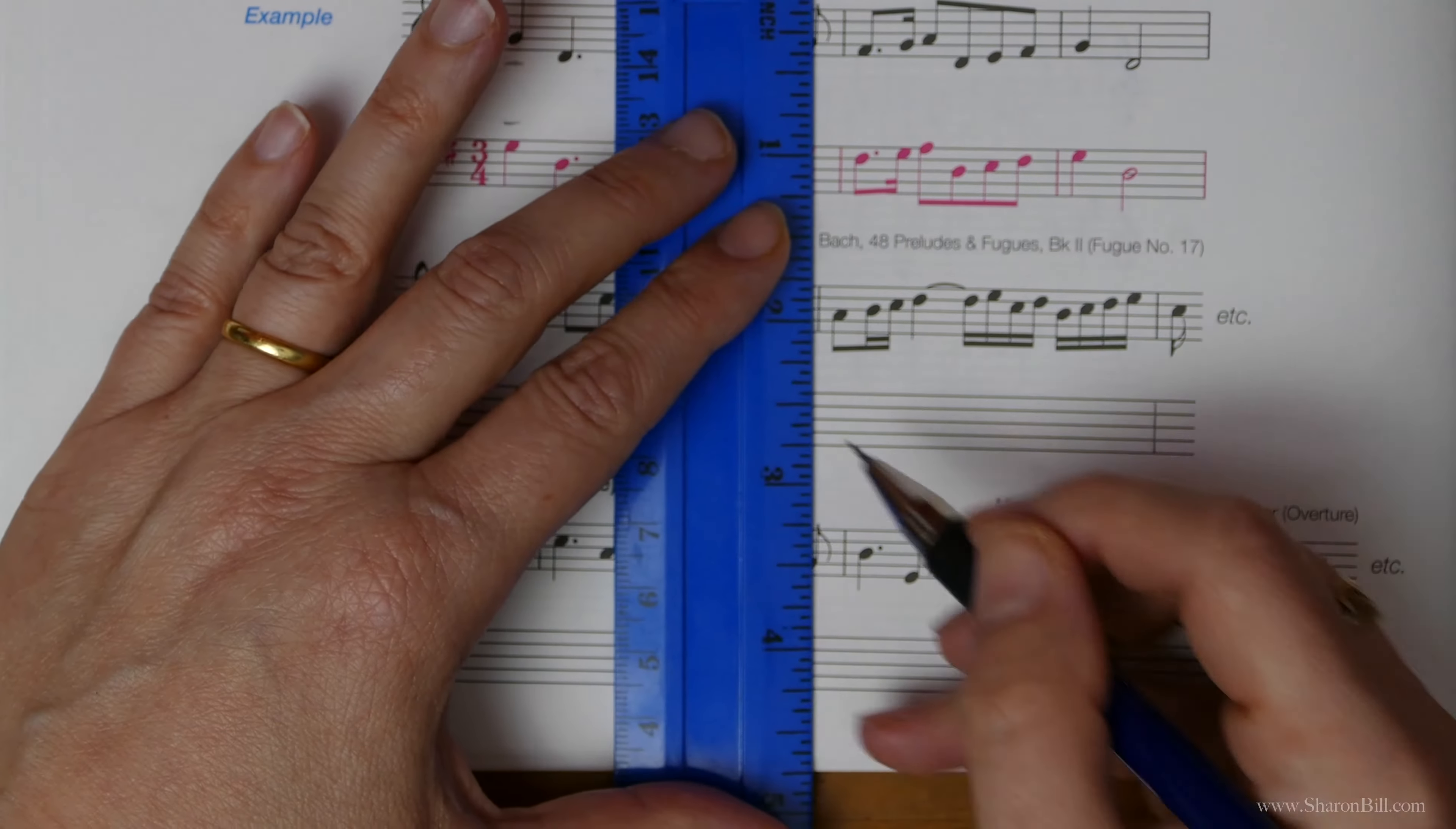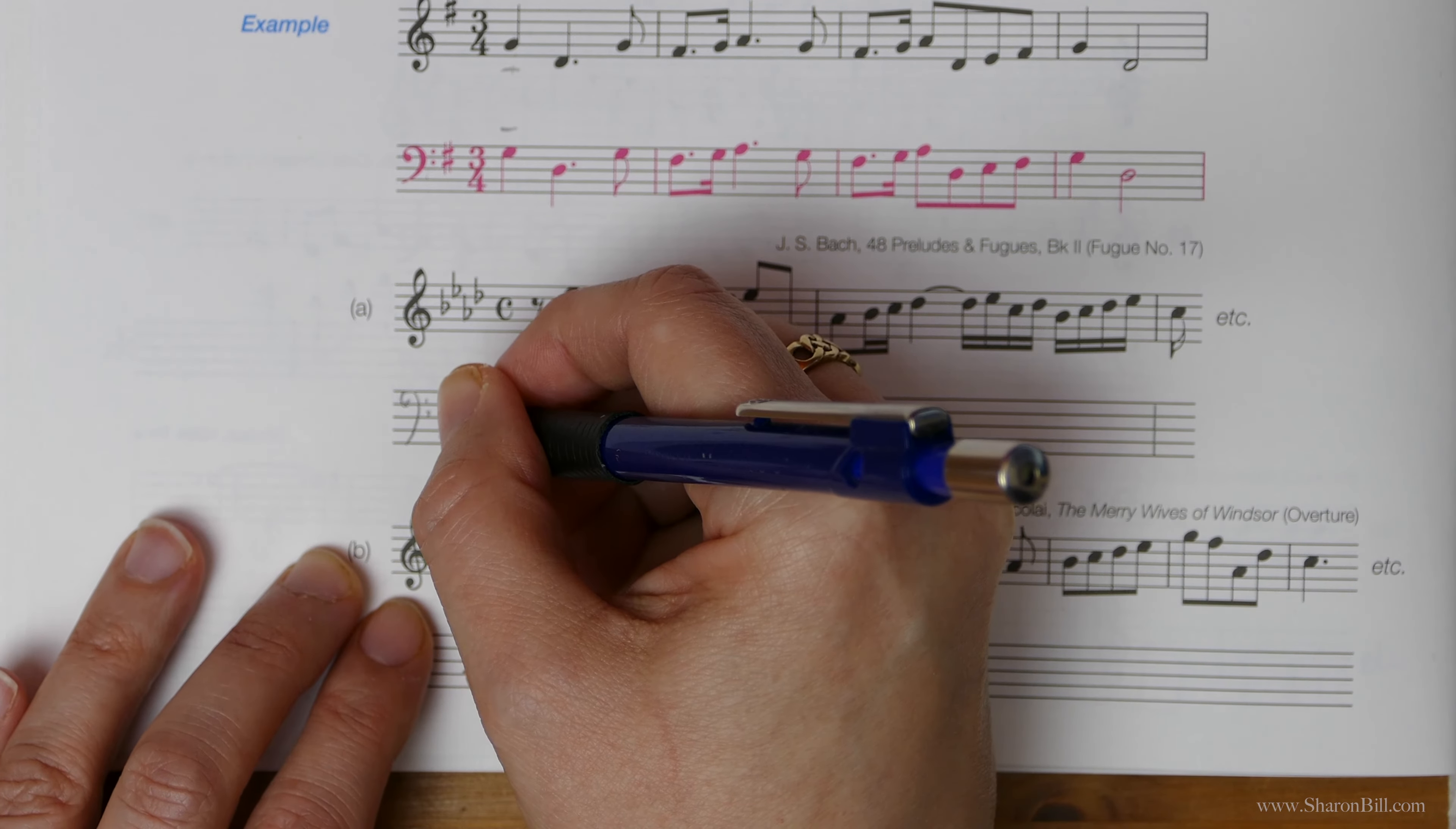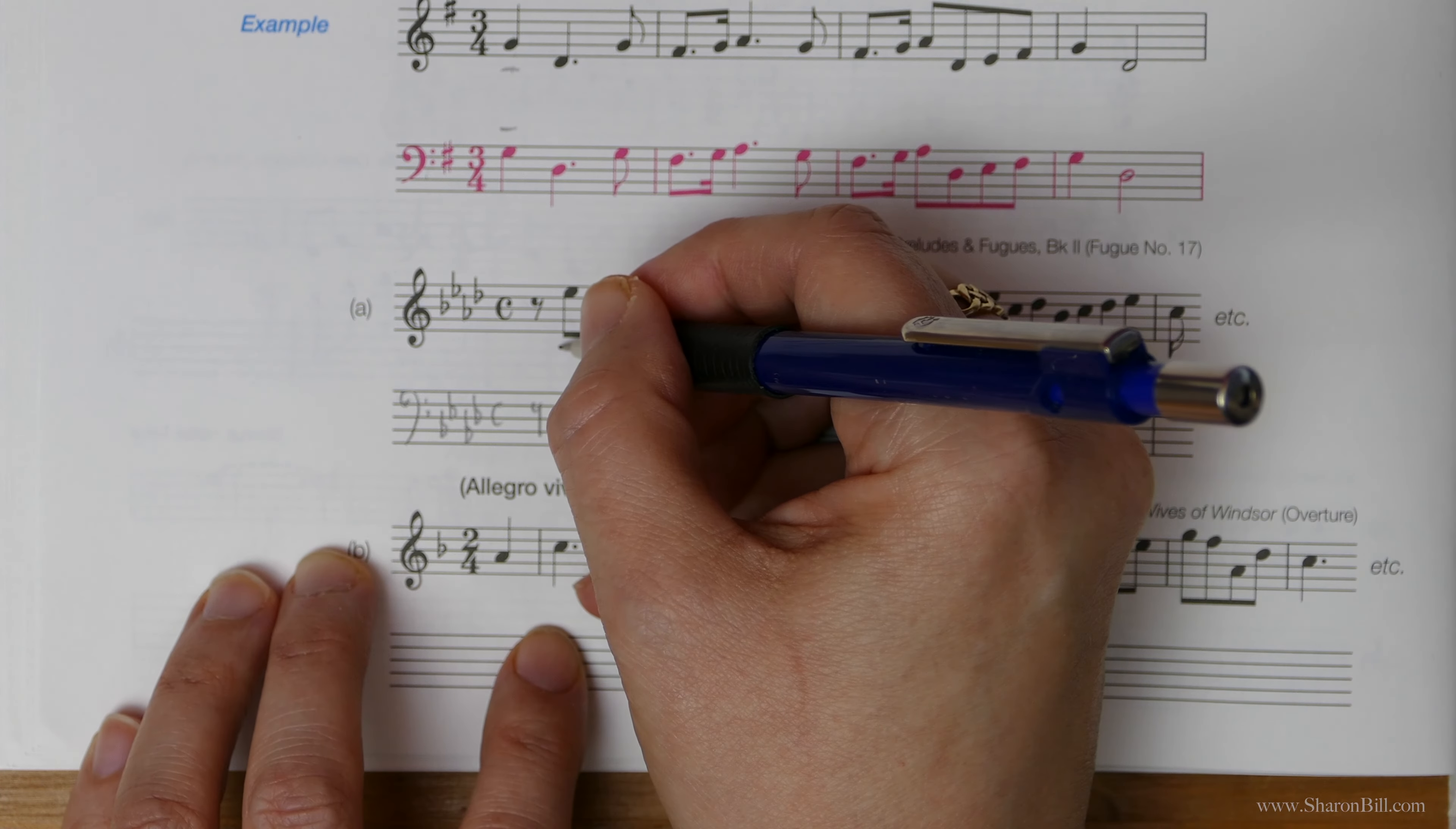So just get your stave set out. Do all the things that don't require any thinking. We're going to be going to bass clef, remember. Transfer your key signature down into bass clef. Everything drops down a line or a space. There's your time signature. We can even start with the rest.